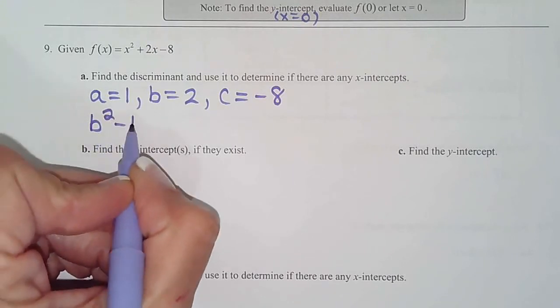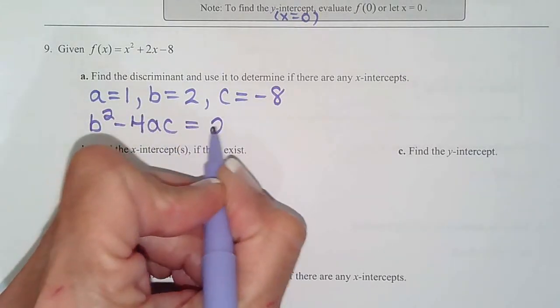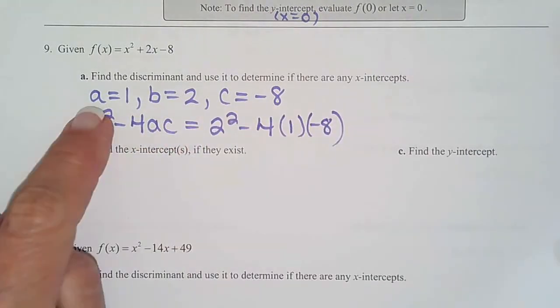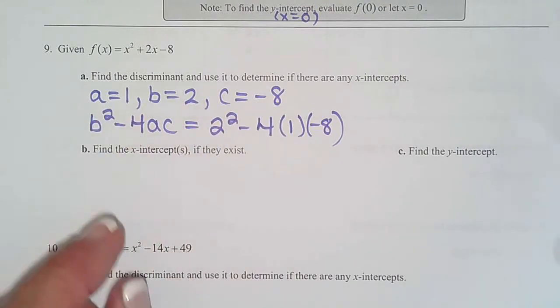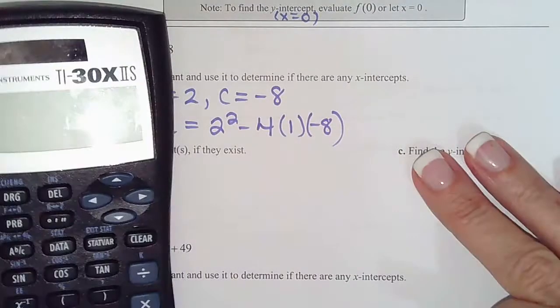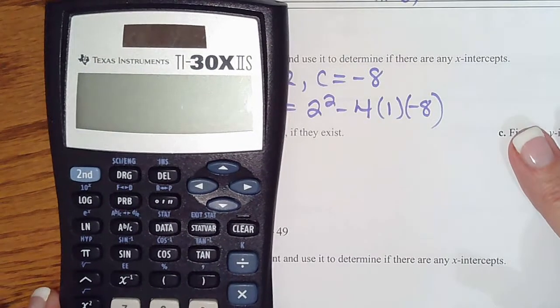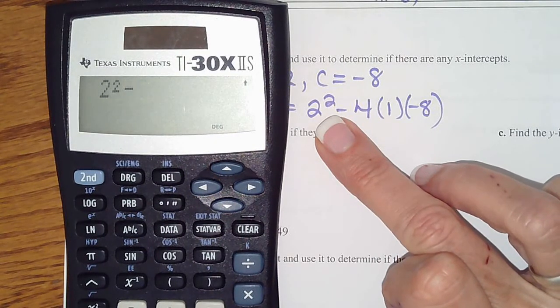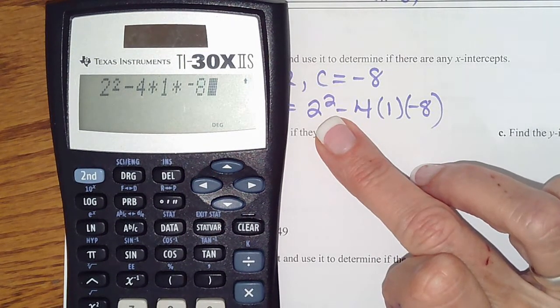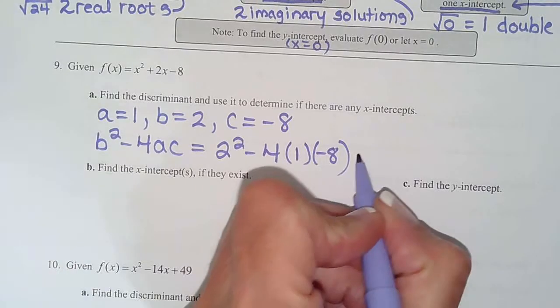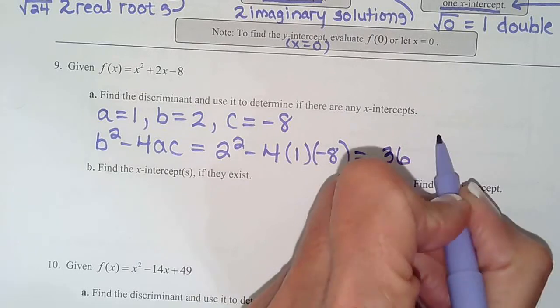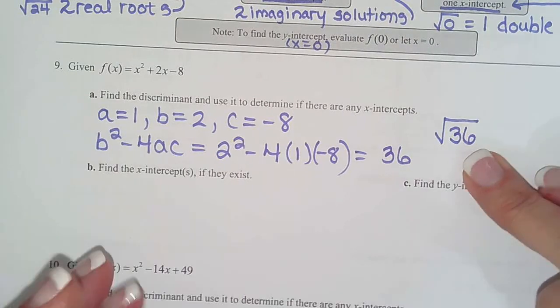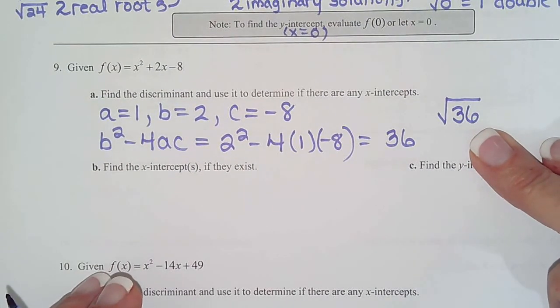And discriminant remember is b² - 4ac. So we do 2² - 4(1)(-8). And like I said before, type that into your calculator so you don't make any sign errors. So we have 2² - 4(1)(-8). And that's 36. And that is a perfect square. So that means there's 2 real rational roots.